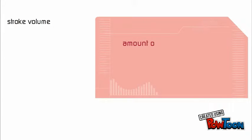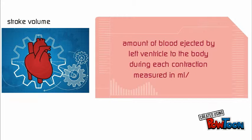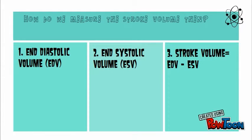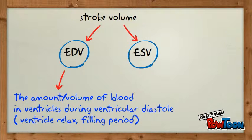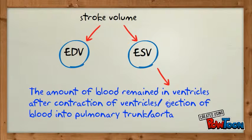Stroke volume is the amount of blood ejected by the left ventricle to the body during each contraction, measured in ml per beat. We can measure stroke volume using end-diastolic volume minus end-systolic volume. EDV is the amount of blood in the ventricle during the filling period, while ESV is the amount of blood remaining in the ventricle after contraction.